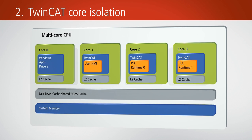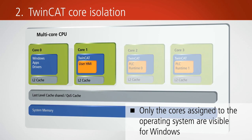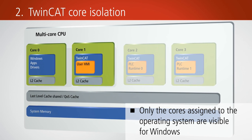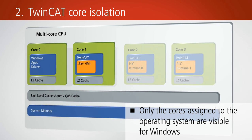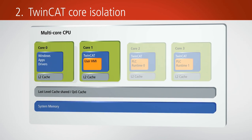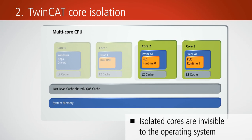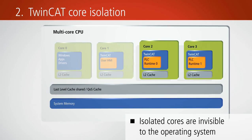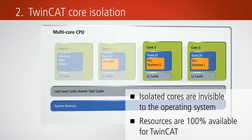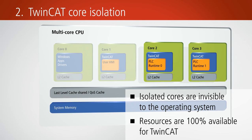TwinCAT features the core isolation function. Individual cores can be exclusively used for TwinCAT real-time applications. Windows can only access the cores assigned to the operating system. The TwinCAT cores are invisible to the operating system. This allows defined cores to be used entirely for the control technology, without being impacted by the operating system.